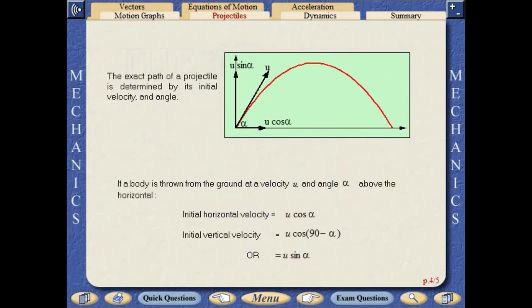The exact path of a projectile is determined by its initial velocity and angle. If a body is thrown from the ground at velocity u and angle alpha above the horizontal, the initial horizontal velocity is u cos alpha and the initial vertical velocity is u cos 90 minus alpha, or u sine alpha.